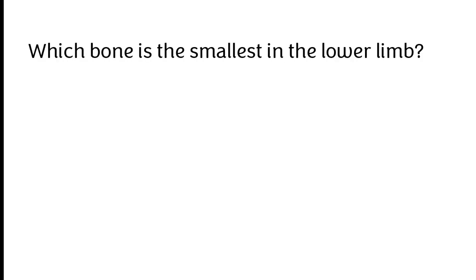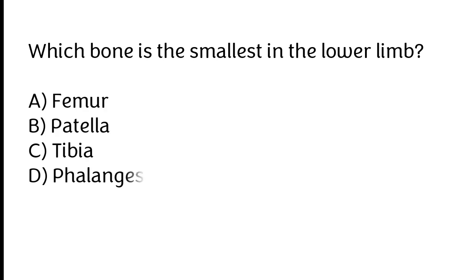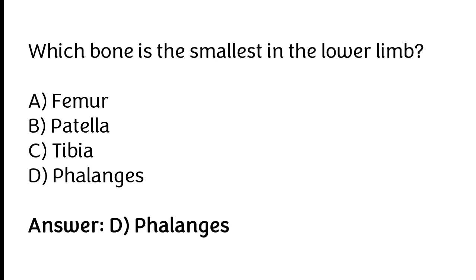Which bone is the smallest in the lower limb? Femur, fibula, tibia, phalanges. The correct answer is option D — the phalanges are the smallest bones in the lower limb.